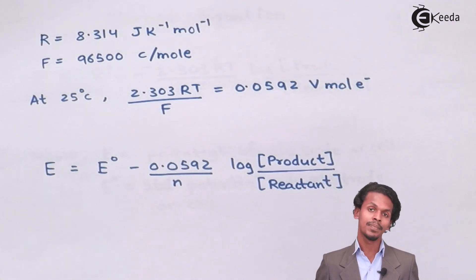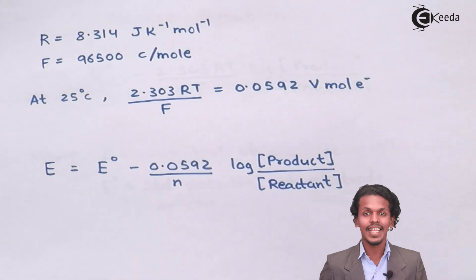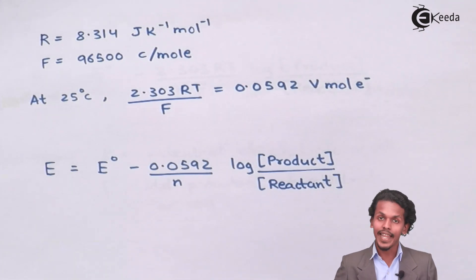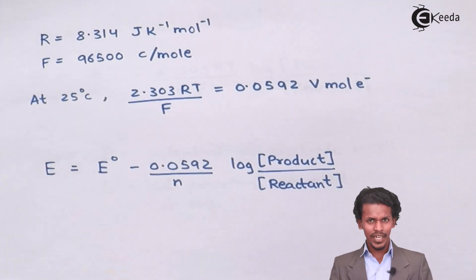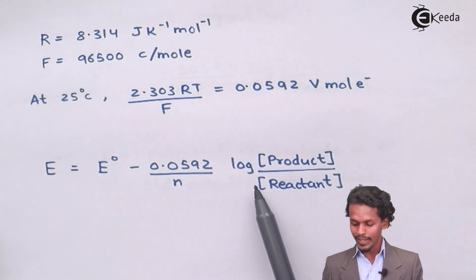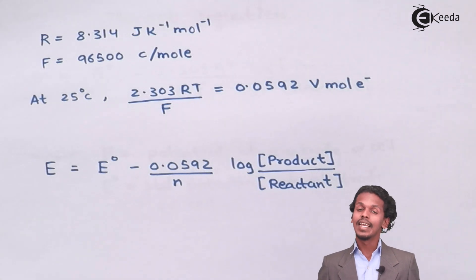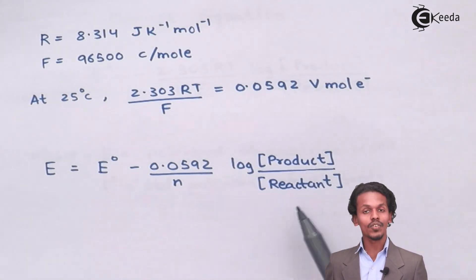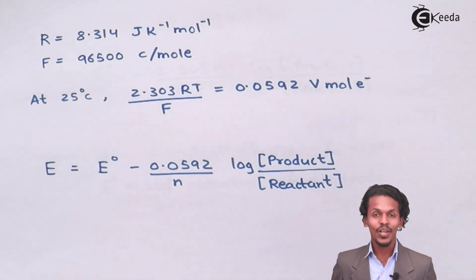So this cell potential will be E equals E° minus 0.0592 divided by n, and in this case n means the number of electrons that is involved in the redox reaction, times log of the concentration of product divided by the concentration of the reactant. How can we say which one would be the product and which one would be the reactant?